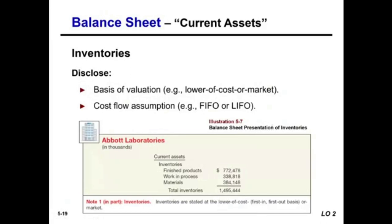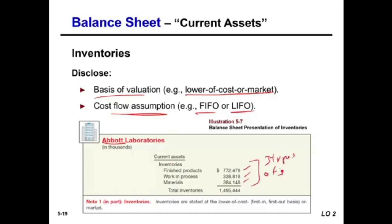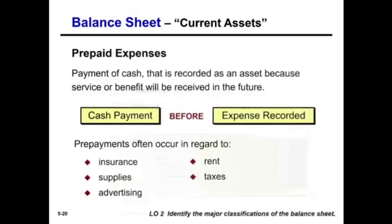For inventory, the company must disclose how they are reporting it — for example, lower of cost or market. They must also disclose which cost flow assumption they use: FIFO, LIFO, weighted average, or specific identification. Looking at Abbott Laboratories, they have finished product, work in process, and materials. Most manufacturing companies have these three types of inventory. The note states: 'Inventories are stated at lower of cost or market using the FIFO basis, first in, first out.' We'll have a full chapter on inventories.